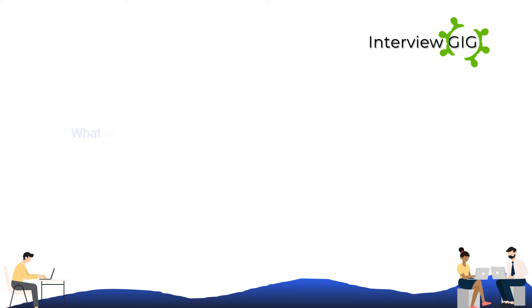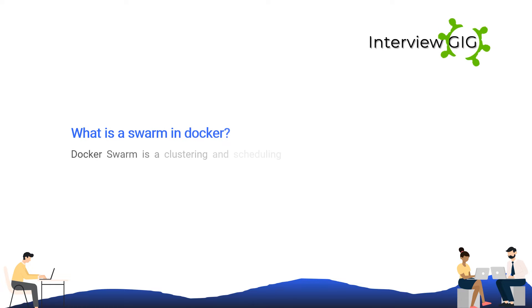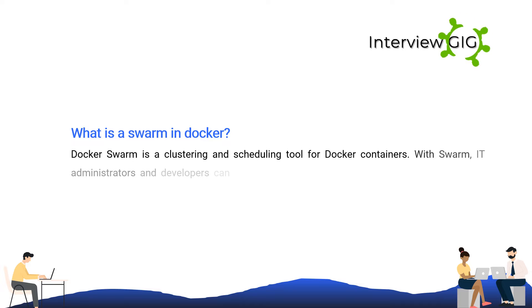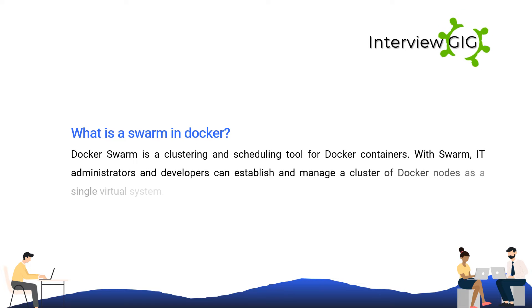What is Docker Swarm? Docker Swarm is a clustering and scheduling tool for Docker containers. With Swarm, IT administrators and developers can establish and manage a cluster of Docker nodes as a single virtual system.